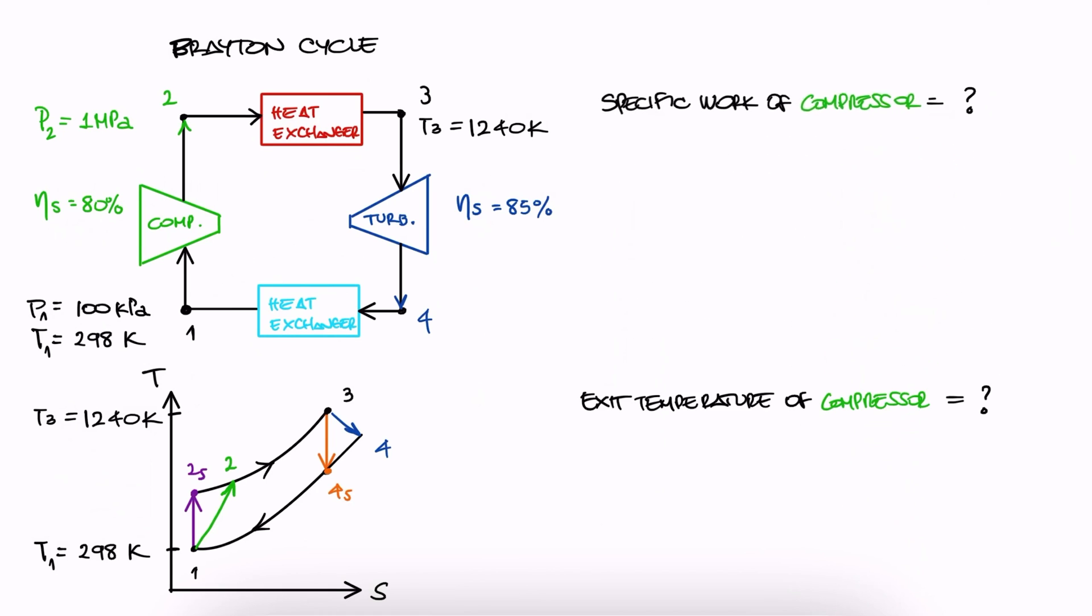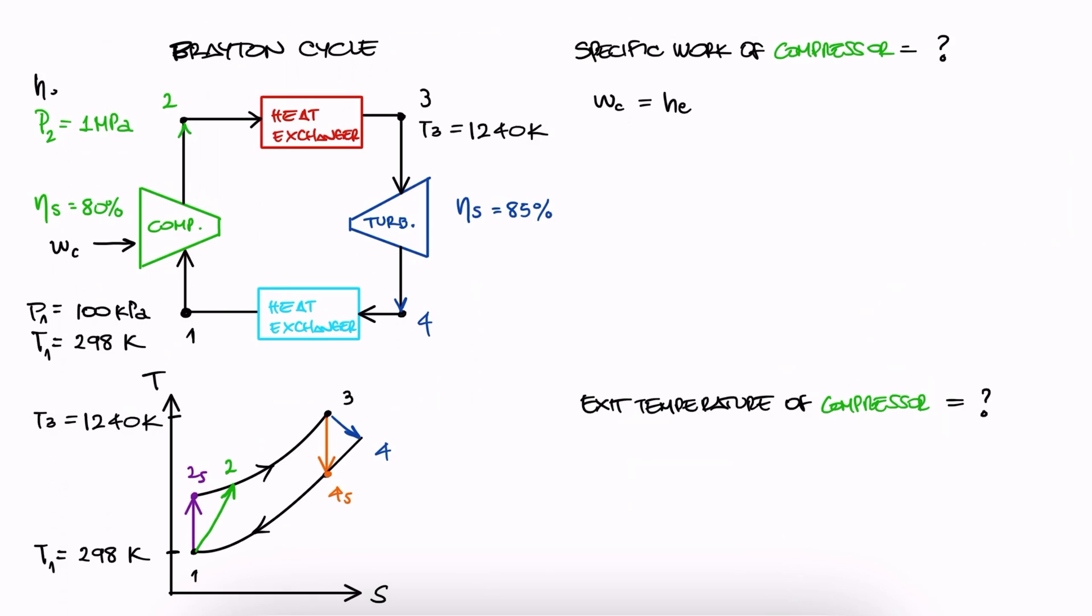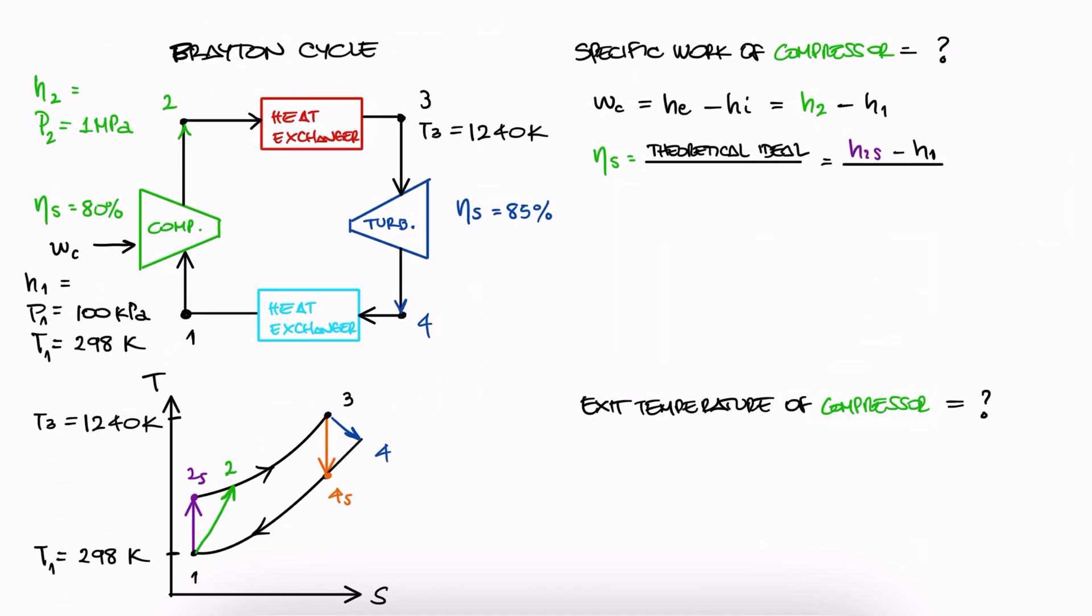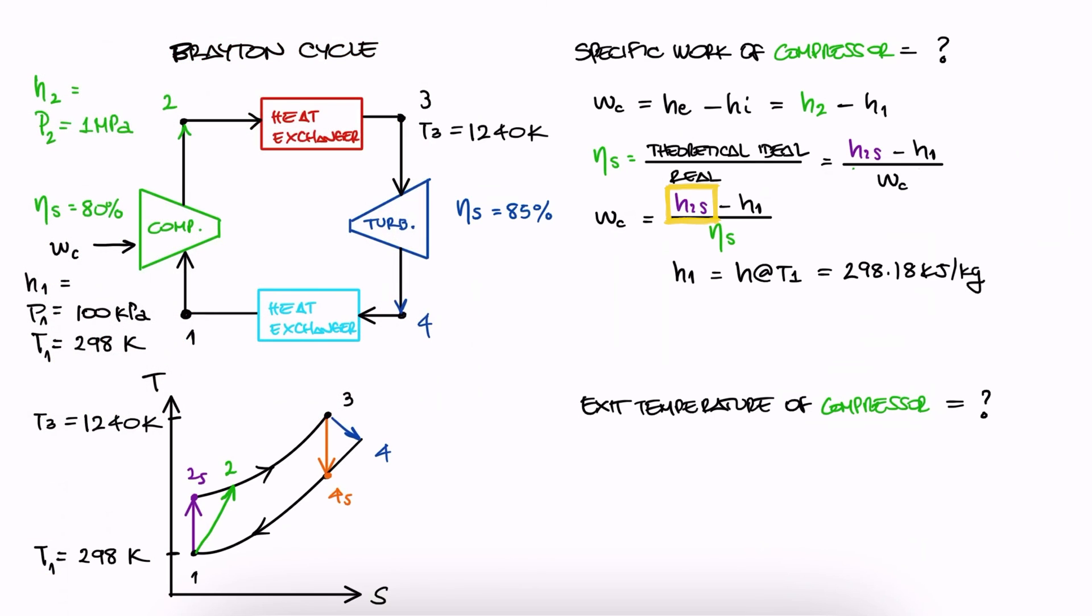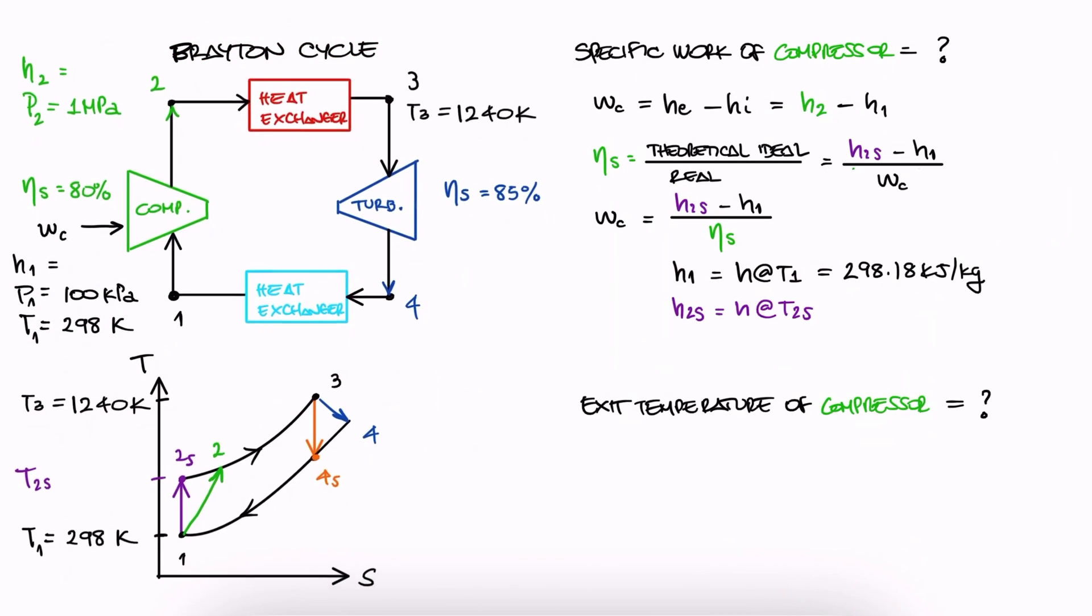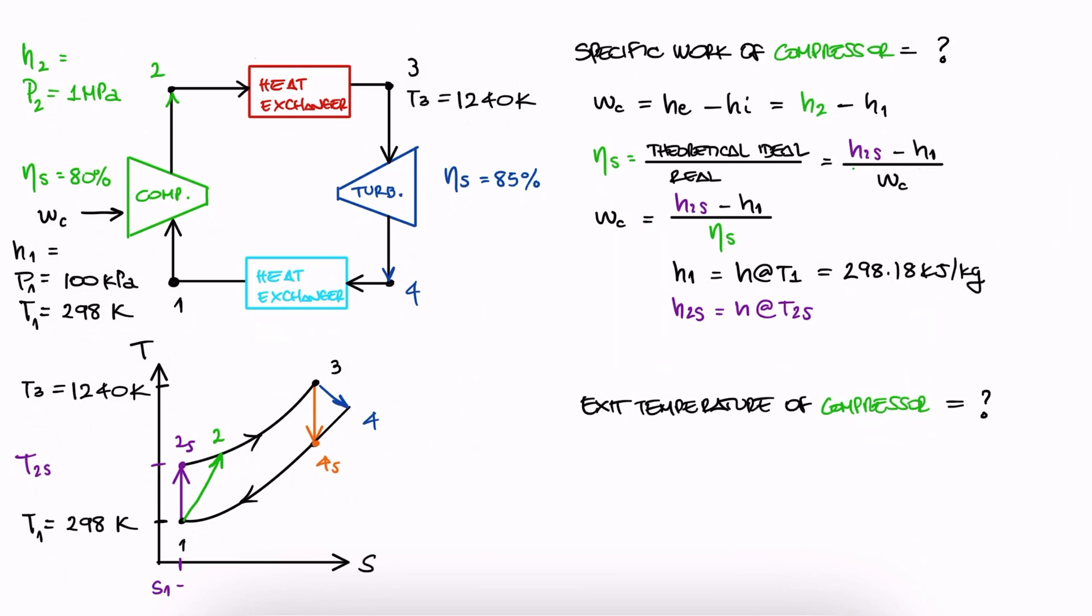The specific work of the compressor will be the specific enthalpy at the exit minus the specific enthalpy at the inlet, meaning H2 minus H1. Since the efficiency of the compressor is defined as the theoretical ideal work H2S minus H1 over the real work that we're trying to find, the work we're looking for is H2S minus H1 over the efficiency value. H1 we can find from the property tables for air at the given temperature 1, and H2S will be the corresponding specific enthalpy value for an isentropic process from 1 to 2.